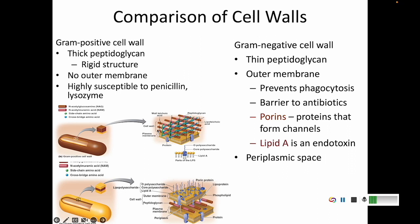A gram-negative cell, however, has only a thin layer of peptidoglycan, and outside of that there is an outer membrane. The outer membrane helps prevent phagocytosis because your immune system can't recognize the hidden peptidoglycan. It also acts as a barrier to antibiotics. The outer membrane has porins — small holes that let things pass through — and contains compounds called lipid A. Lipid A by itself will make you sick; this is called an endotoxin. If the cell bursts and lipid A is released into your body, you will feel very ill. Gram-negative cells also have a periplasmic space — the space between the two membranes.